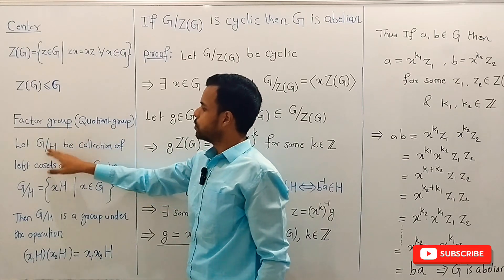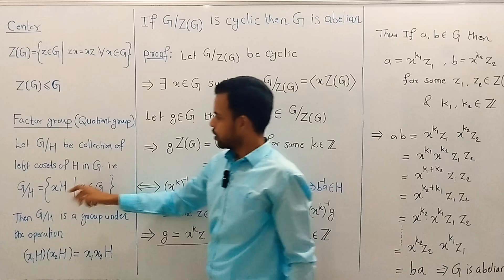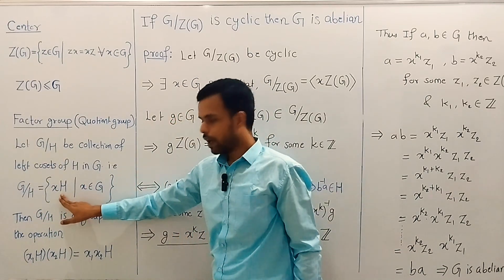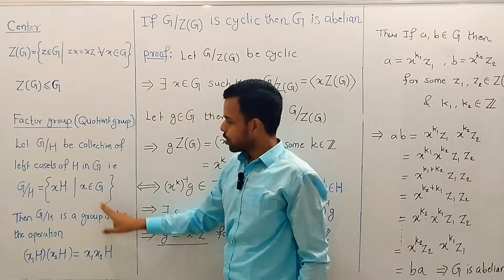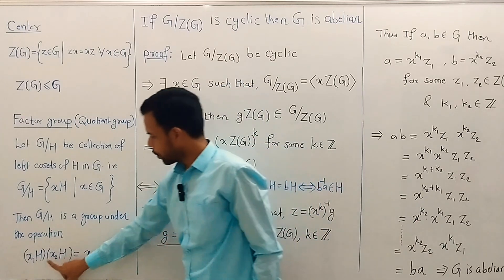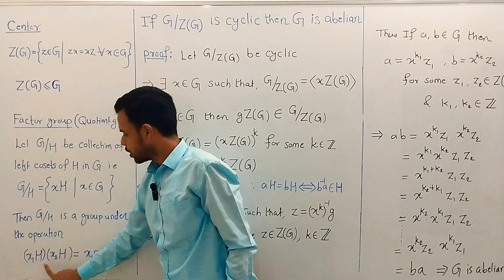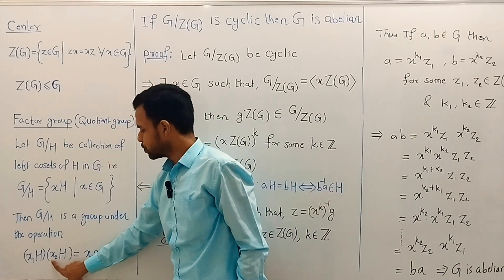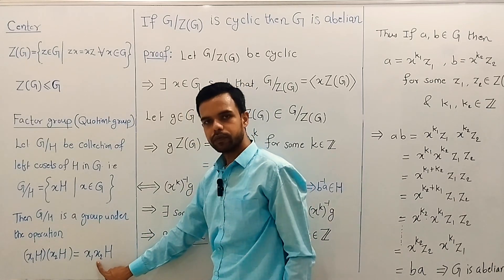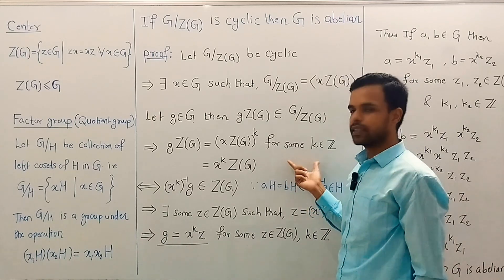The quotient group, that is the factor group G by Z(G), is a collection of all left cosets of Z(G) in G. It is a group under the coset operation. This operation gives: the left coset containing x1 times the left coset containing x2 equals the left coset containing x1·x2. We will use these two definitions in this proof.